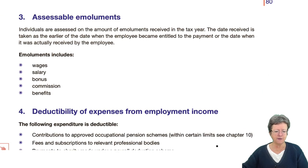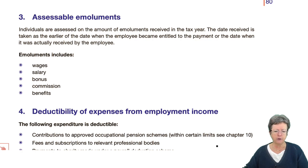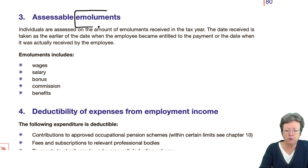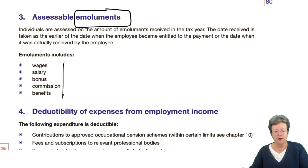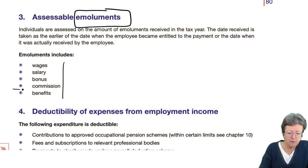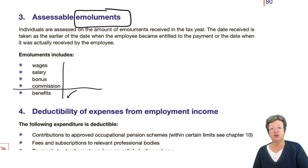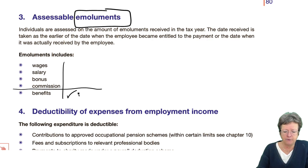Now, what is assessable on an individual who works as an employee? This is a technical term — emoluments — and it includes wages, salaries, bonuses, commissions, and benefits. This part — benefits in kind — is what makes up most of this chapter.